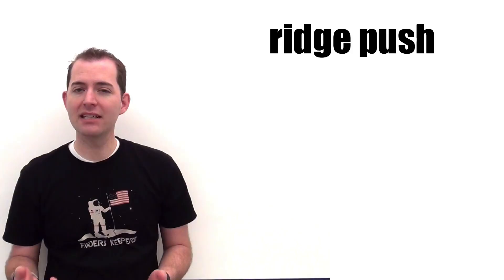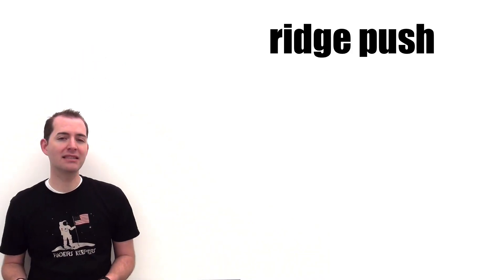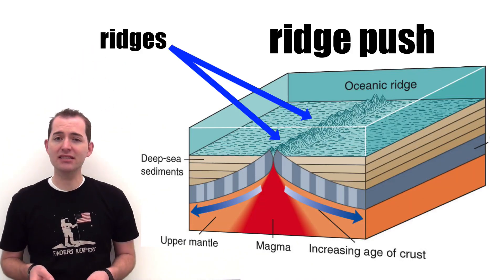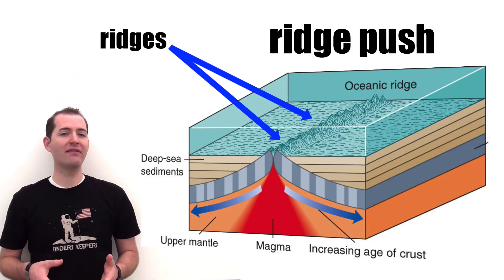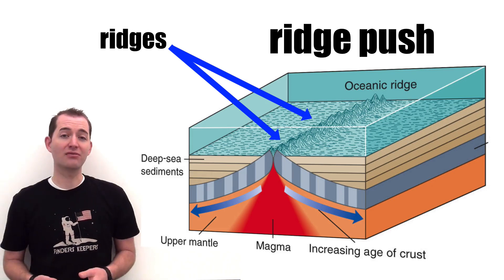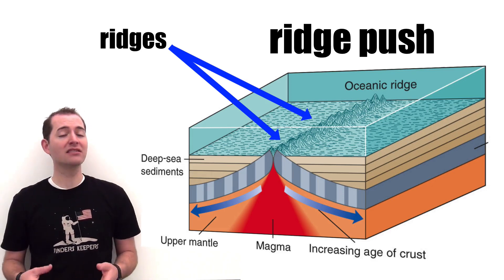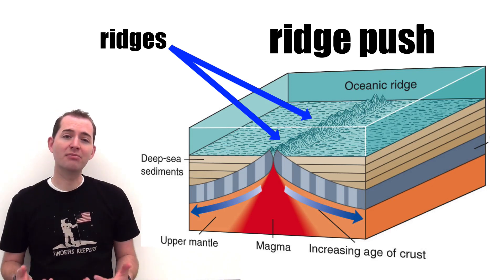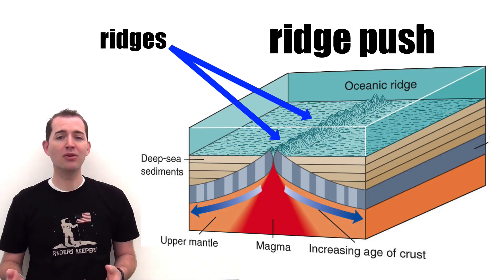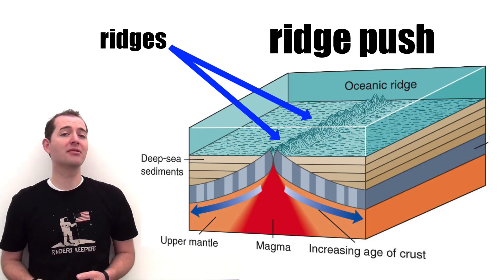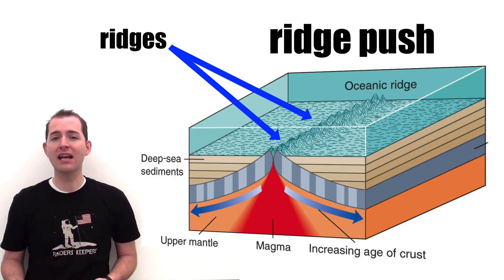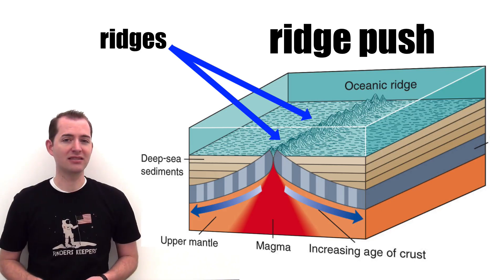Divergent boundaries and the new crust formed at them are also responsible for another mechanism: ridge push. This proposed mechanism states that because there are ridges at divergent boundaries and they have a higher elevation than the surrounding lithosphere, there is a force of gravity that helps to pull the plates apart. And this pull from gravity continues to help the process of moving the plates and creating a divergent boundary.